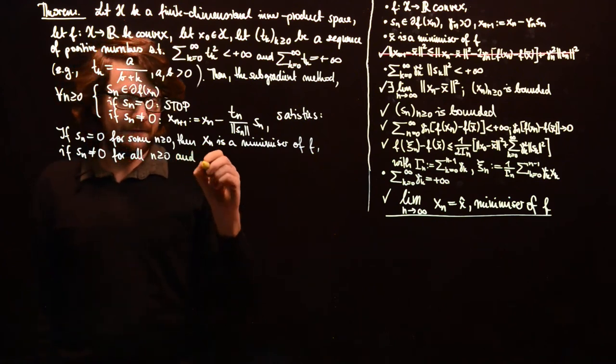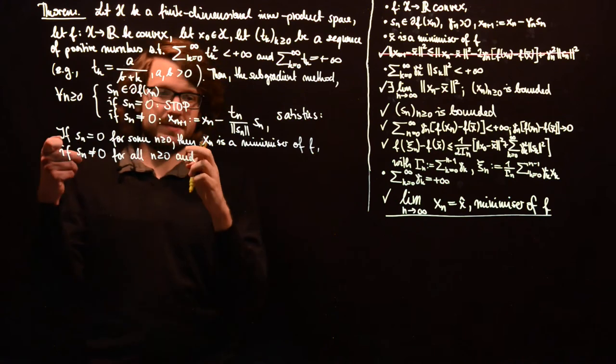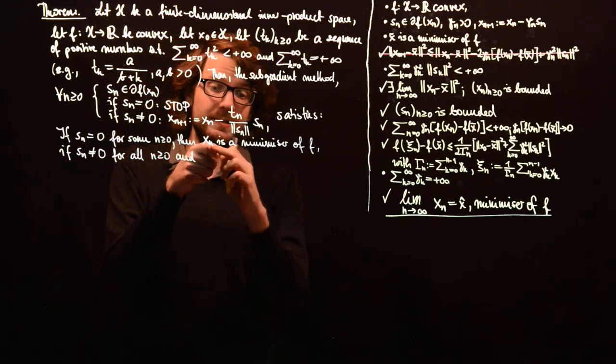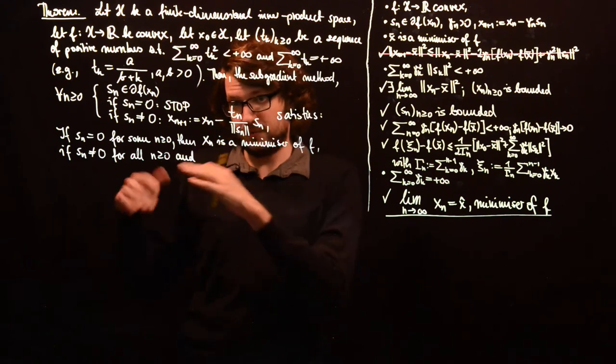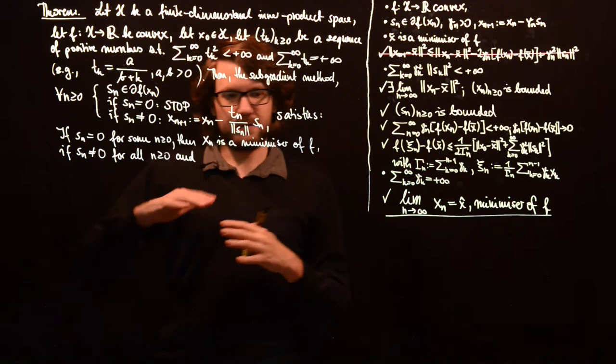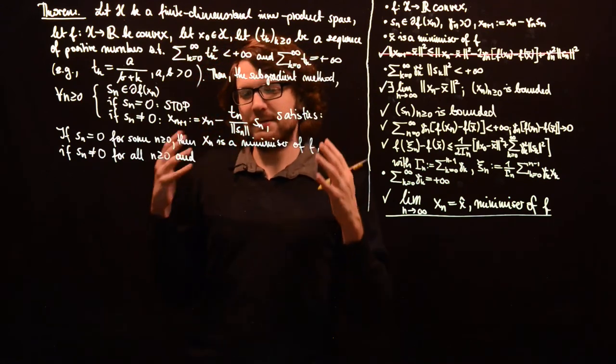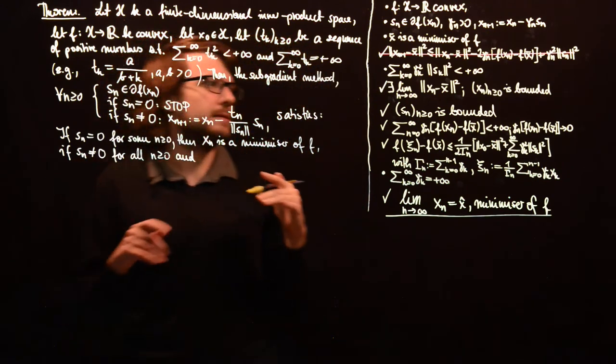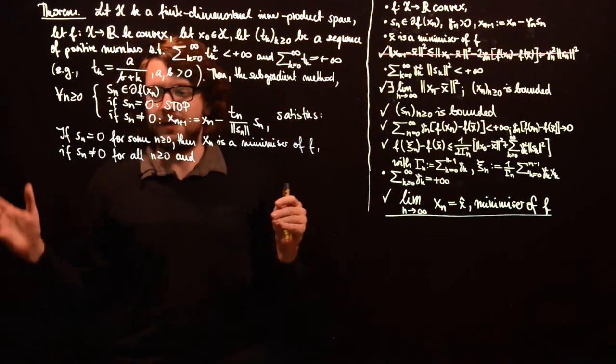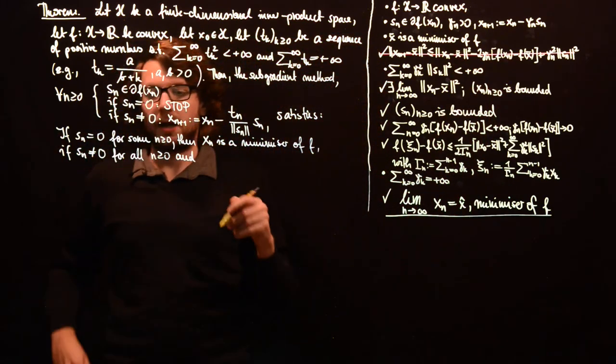And if there exists a minimizer in the first case, if this ever stops, then we know that x_n has to be a minimizer of f, which we will prove. But we need to assume the existence in the case that we don't stop our algorithm.